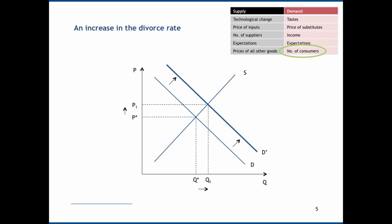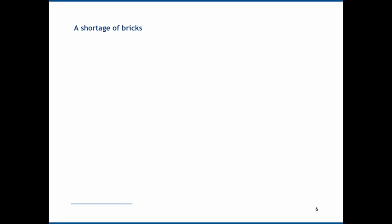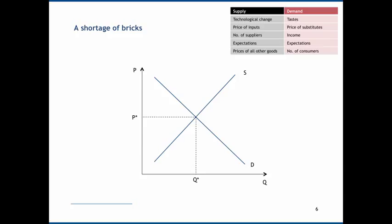We can think of another effect. Let's consider a shortage of bricks. Here's our demand supply diagram. A shortage of bricks is going to raise the price of an input. Step one is to identify that it's going to primarily affect the supply curve. Step two is to realize that this is going to make suppliers less willing to supply, so it's going to be a negative supply shock and cause the supply curve to shift inwards.